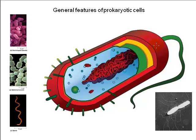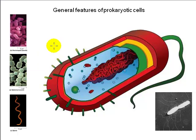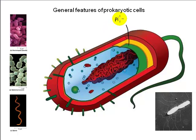Let's take a look at the general structure of a prokaryotic cell. Here we're looking at a cartoon representation of a typical rod-shaped prokaryotic cell such as E. coli, found in your gut. Other common shapes are round or spiral-shaped. A defining characteristic of prokaryotic cells is their lack of internal compartmentalization — there are no membrane-enclosed subcellular domains.